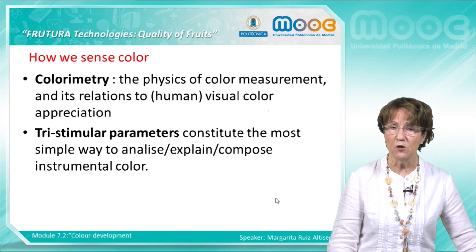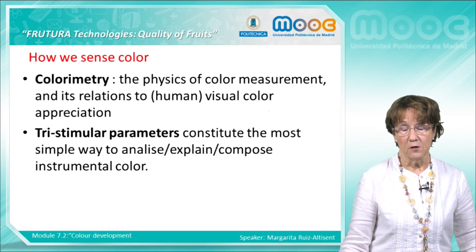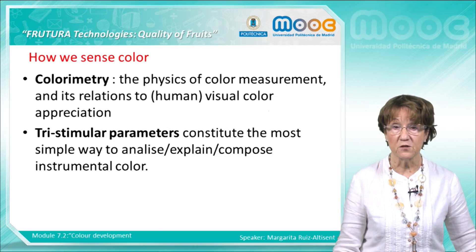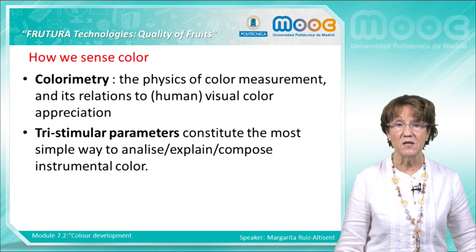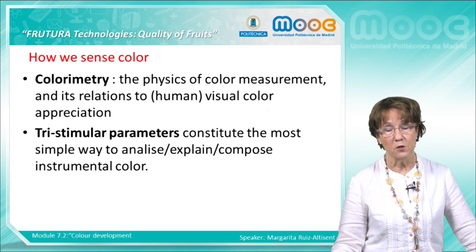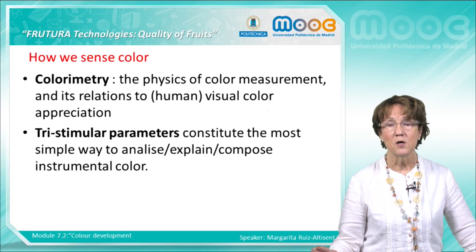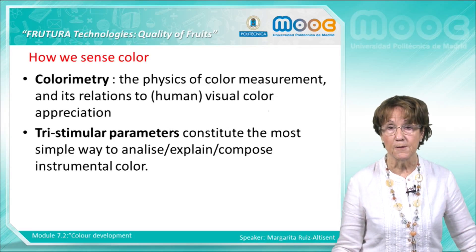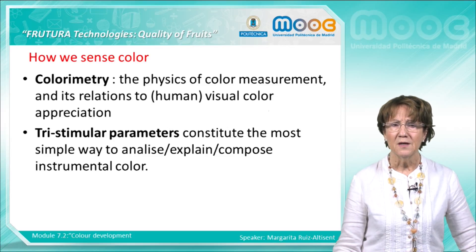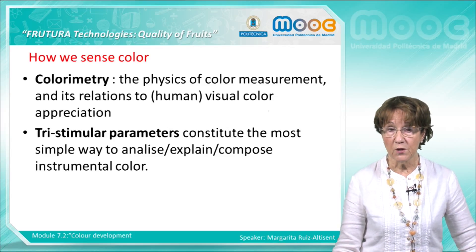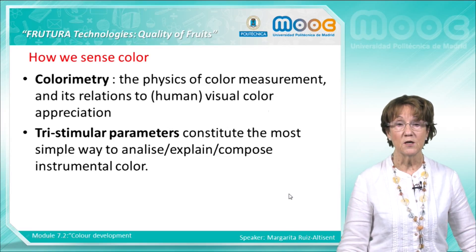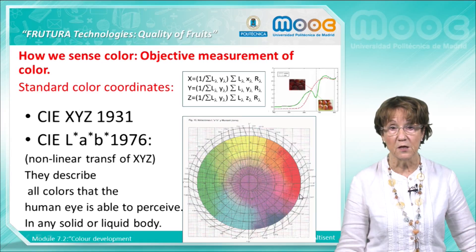How do we sense color? There is a science called colorimetry — it is the physics of color measurement and its relation to human visual color appreciation, which has been a very interesting subject for humans for many years. There are three similar parameters that constitute the most simple way to analyze, explain, and compose instrumental color.